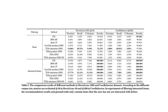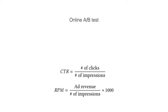Our offline experiments show that the proposed tree-based method achieves state-of-the-art performance on two large-scale real-world datasets, including MovieLens 20 million and the User Behaviour dataset from Taobao. Our online A/B test results show that the tree-based model brings improvements in both click-through rate and advertising revenue.